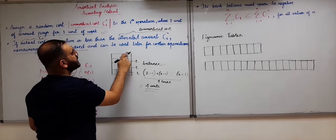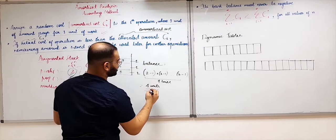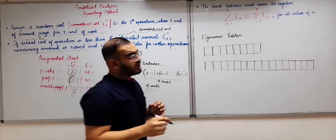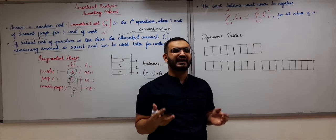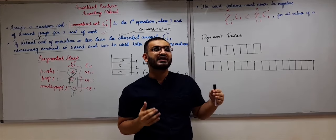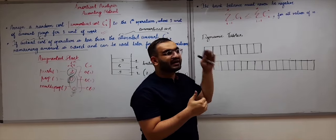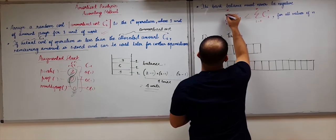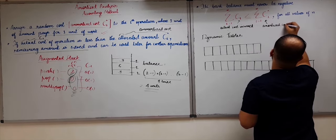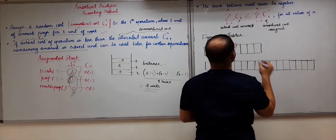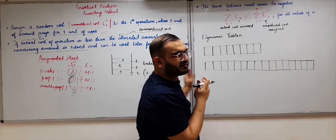The balance will change, but despite assigning a lower cost for some operations, we can still perform them using the saved balance. A critical statement is that the bank balance must never be negative. Whatever cost estimation we do — overestimation or underestimation — the sum of total amortized cost must always be greater than or equal to the sum of total actual cost incurred by all operations performed until now. Only then is our amortized analysis a correct analysis of time complexity.